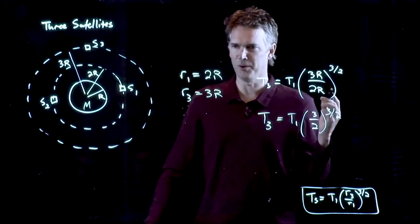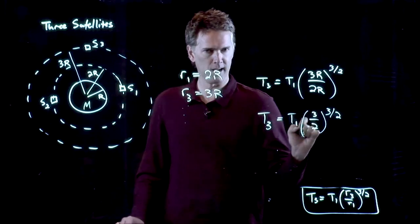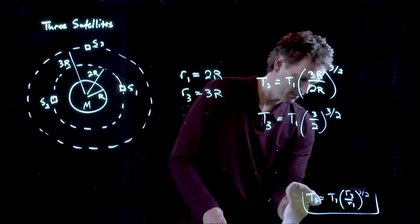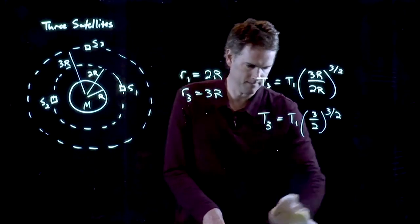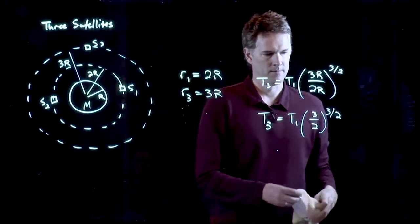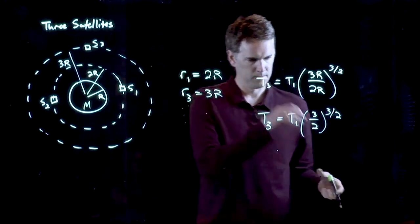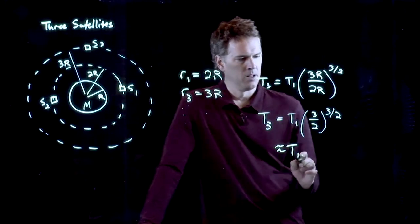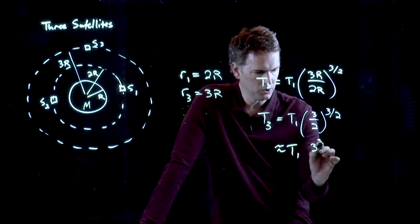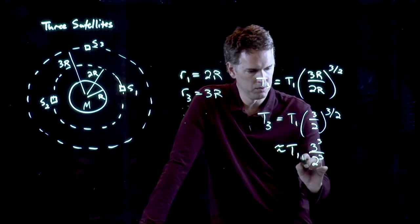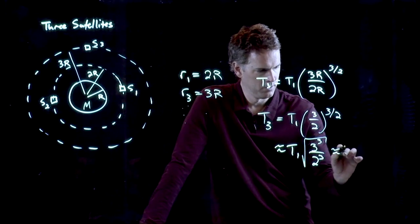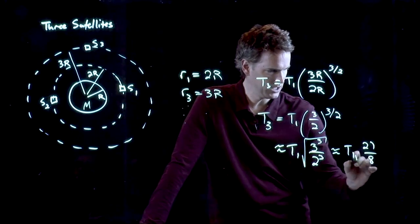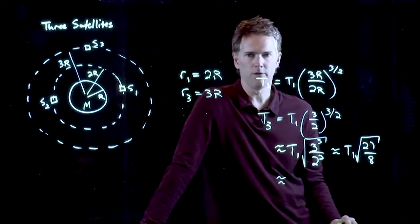I have no idea what that is. Somebody punch in your calculator. What is 1.5 raised to 1.5? Okay. Let's approximate it and then we'll confirm that you were right. This is the same as 3³ over 2³ square rooted. 3³ is 27. 2³ is 8.